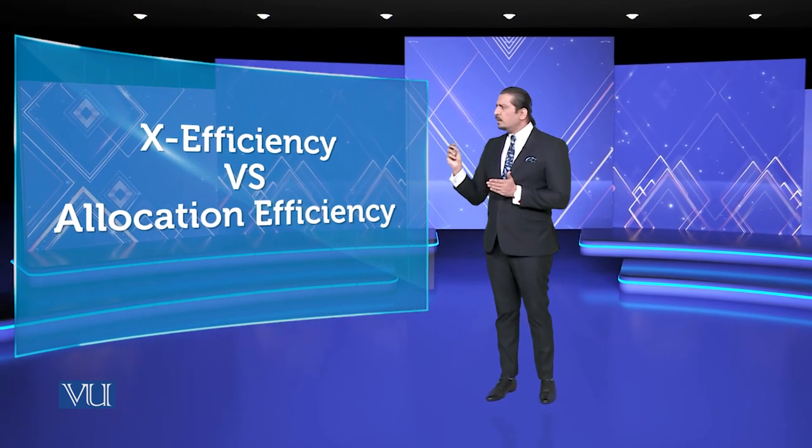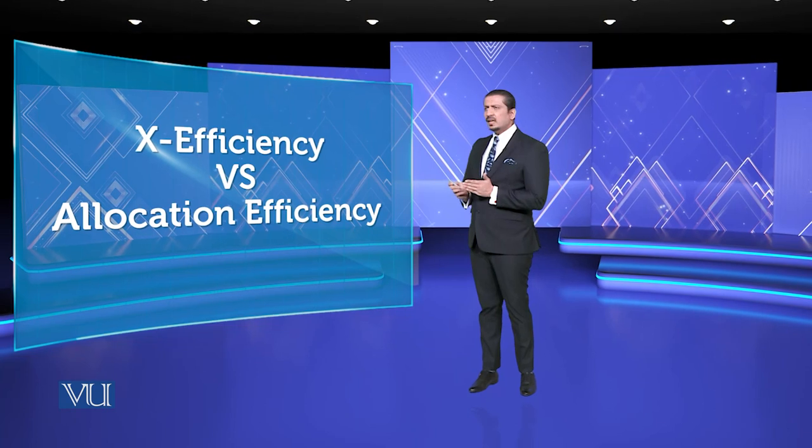ہر individual کا ایک certain standard ہوتا ہے جس تک وہ efficiency دے سکتا ہے، اور اسی کے مطابق output ملتا ہے۔ ایک ہی انسان سے holistic output demand کرنا ممکن نہیں۔ اس لیے انہوں نے new classical theory کو avoid کیا اور کہا کہ maximum rationalism یہ ہے کہ selective rationality تک رہا جائے، نہ کہ complete rationality کی طرف جایا جائے۔